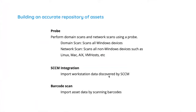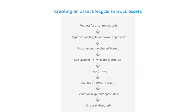That brings us to the end of hack one — building an accurate repository of all your assets. Hack number two is creating an asset life cycle to track all your assets. Each asset has a life cycle: it's either being used by an employee, in storage, under repair and not being used, or expired and needs to be disposed of. There are various statuses that assets go through, and it's important to track them.